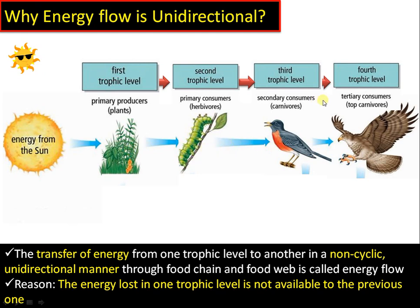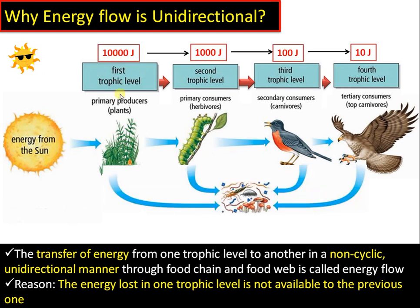Energy flow can also occur through a food web. A food web is simply an interconnected network of food chains. Now the second question: why is energy flow unidirectional?